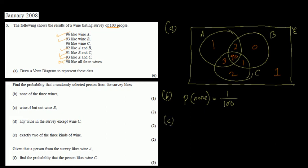Question three asks for the probability of liking wine A but not wine B. This refers to A intersection B prime. A intersection B prime means only the region of A excluding B. So we look at that region — there are 1 plus 1 plus 2 = 4 people — giving a probability of 4/100.